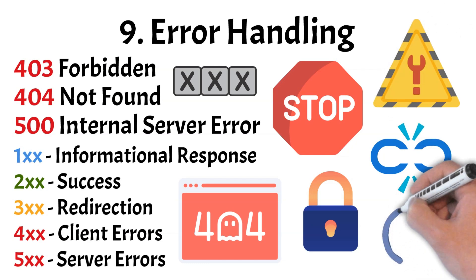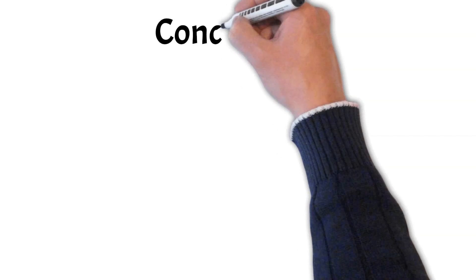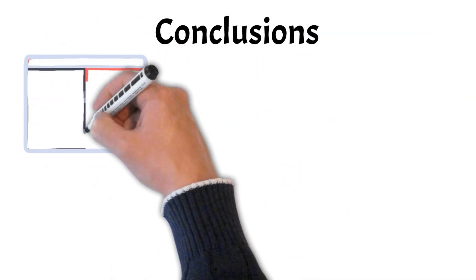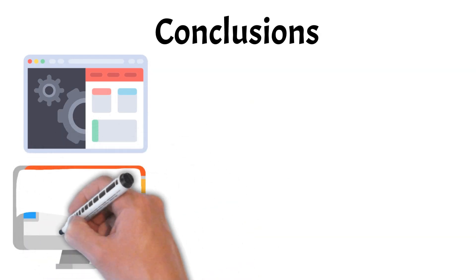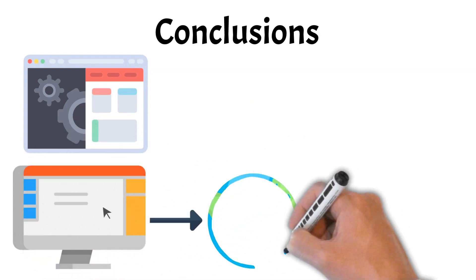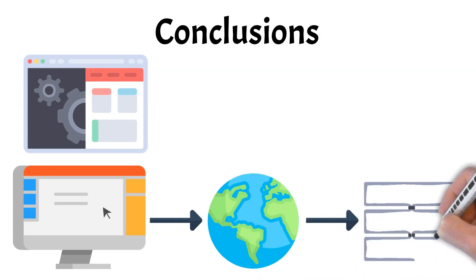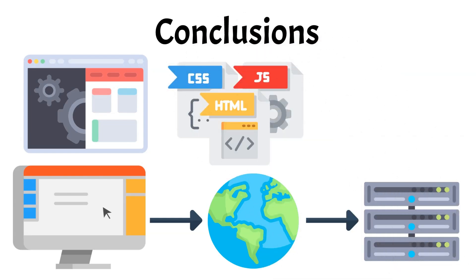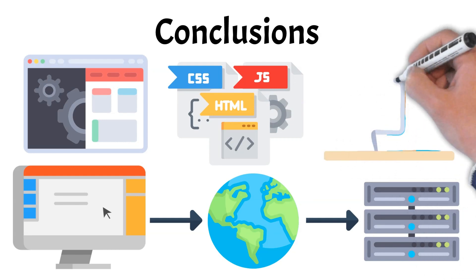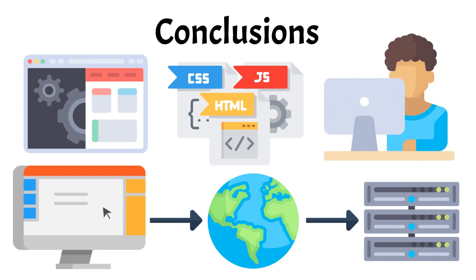In conclusion, every time you hit enter in your browser, a complex journey begins — from forming a request, reaching a server, receiving a response, and finally rendering a web page on your screen. Along the way, key technologies like HTML, CSS, JavaScript, and the DOM work together to bring websites to life. Understanding this process not only helps demystify how the web works, but also lays the groundwork for deeper topics like web development, networking, and cybersecurity.